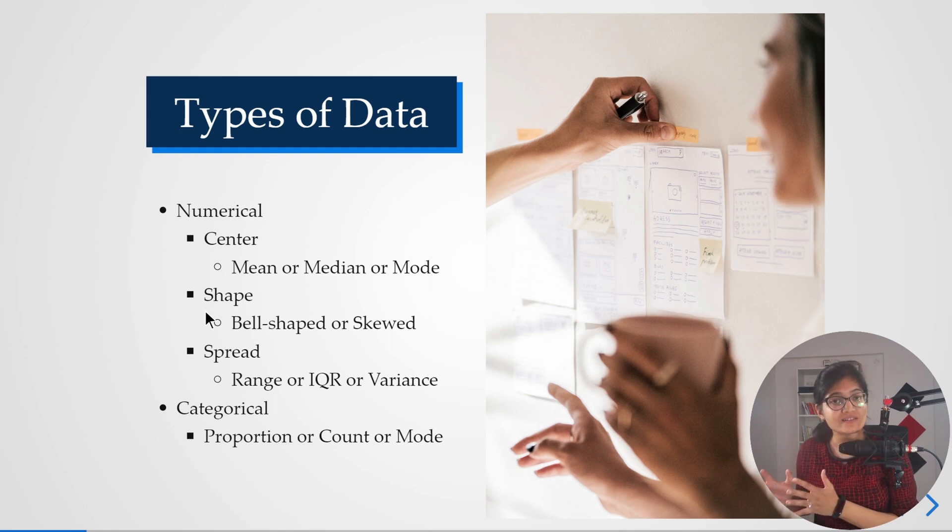How the data is spread and how we can measure that. We can measure using three important metrics called range, interquartile range, and variance. We'll try to see the pros and cons of each and every particular metric that we have and then we'll try to compare those metrics.